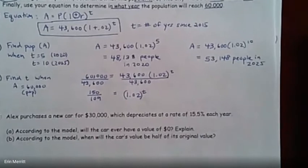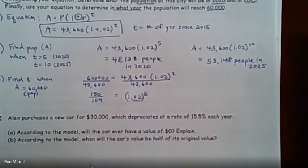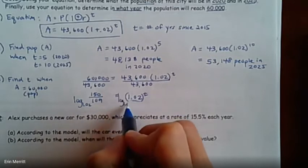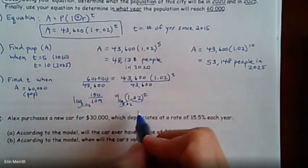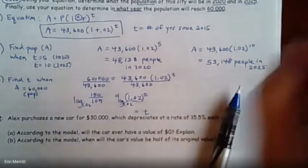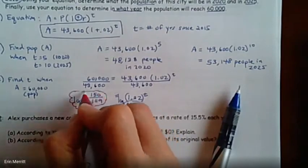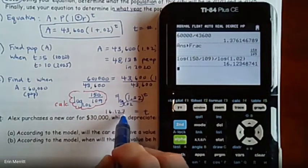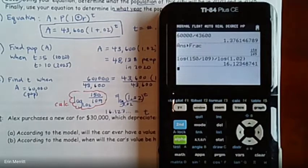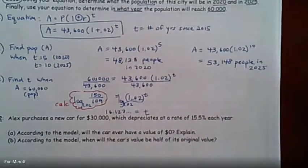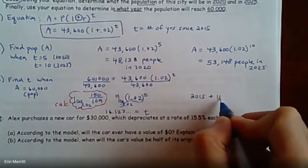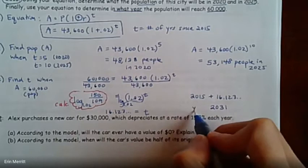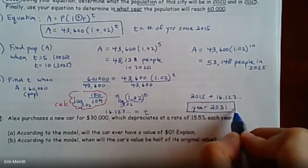If it divides out pretty, go for it. If it doesn't, keep it as exact as possible. So 60,000 divided by 43,600, maybe math frac it or keep it running so it's exact. 150 over 109 equals 1.02 to the t power. To use logs, we're going to do log base 1.02 of the left side and log base 1.02 of the right-hand side. This piece will cancel out and you're left with t. This part goes into your calculator, about 16 and change. In what year? It starts in 2015, adding on 16 years. In the year 2031 is when the population reaches 60,000.